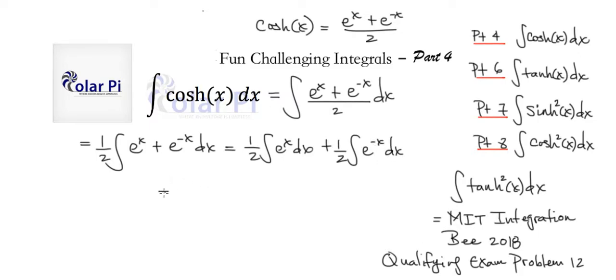Now, we know that this can in turn be written as one half, and the integral there is just e to the x. So one half times e to the x, and then plus, and then we have one half, and the integral here is negative e to the negative x.